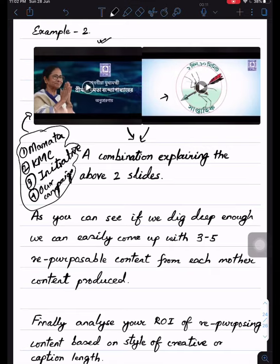As you can see, we can easily come up with three to five pieces of repurposed content from each mother content produced.